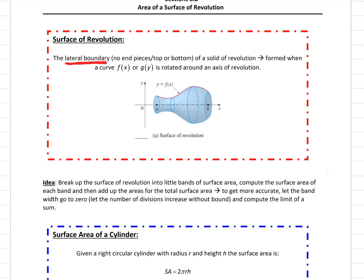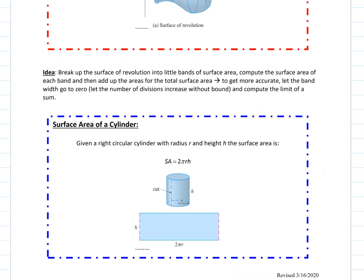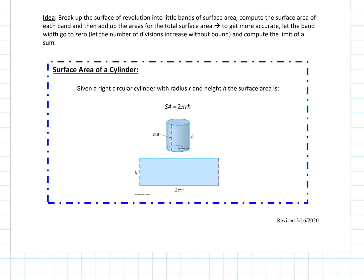To do that, we're going to split it up into little bands of surface area and compute the surface area of each of those bands, add them all up for the total surface area, then let the band width go to zero — let the number of divisions increase without bound — and that's going to turn into an integral.